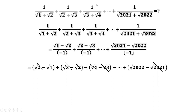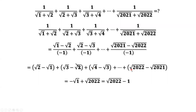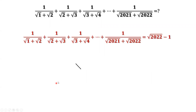Let's continue. In summary, after all the cancellations we are left with only square root of 2022 minus 1. This is the answer to our original question. The sum of 2021 terms equals square root of 2022 minus 1.